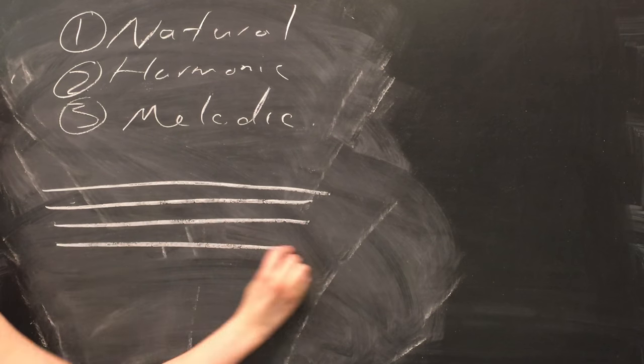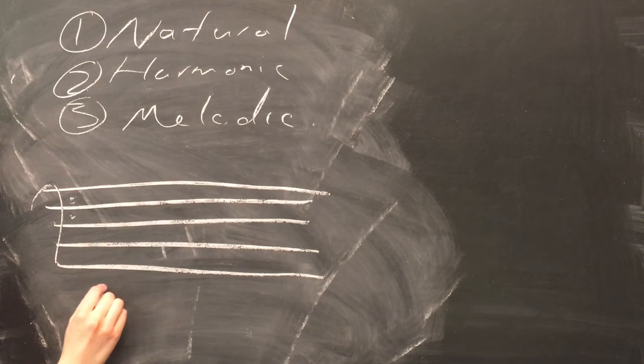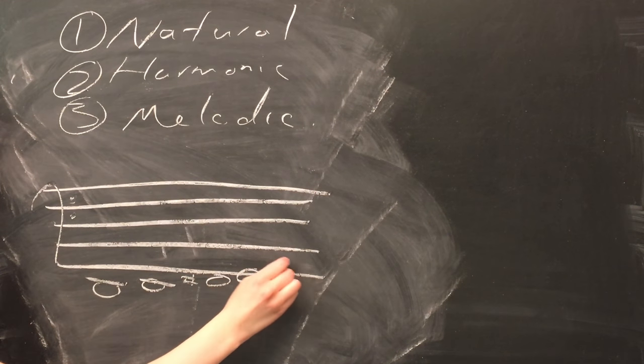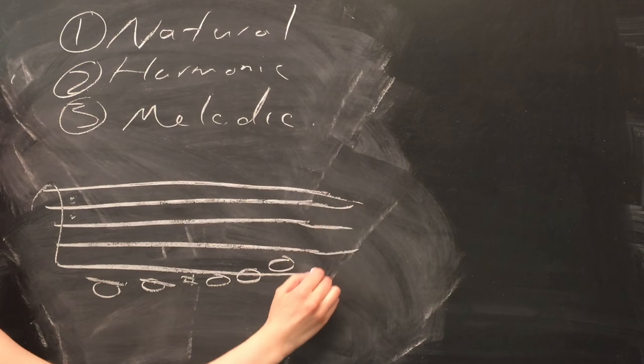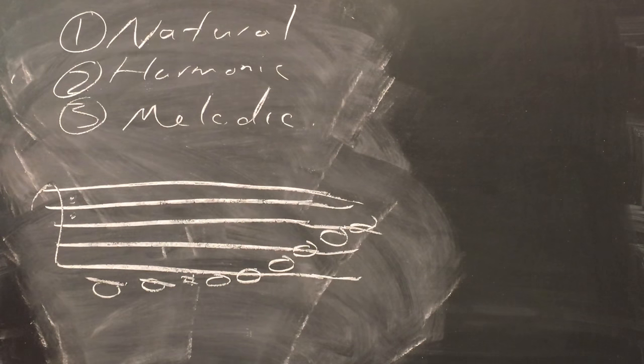A major scale's relative minor starts on the sixth scale degree of the major scale. For example, here we have a D major scale that I'm drawing. And as you can see, the sixth scale degree is B, so the relative minor of D is going to be B minor.